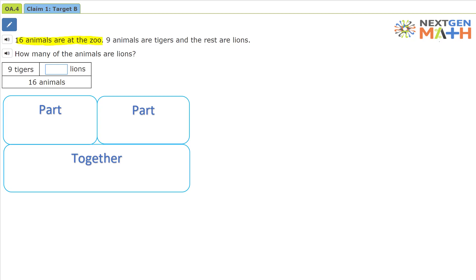16 animals are at the zoo. That's all together. There are 16 animals. Nine animals are tigers, so nine of the animals are tigers. So we have nine tigers, and the rest are lions, but we're not sure how many are lions, so we put an unknown number there.